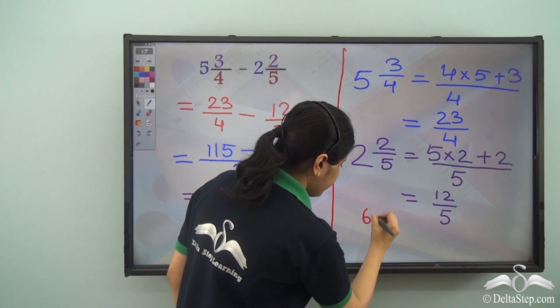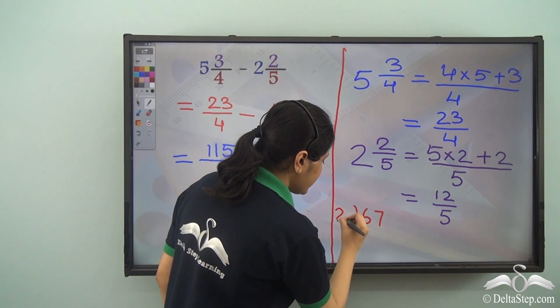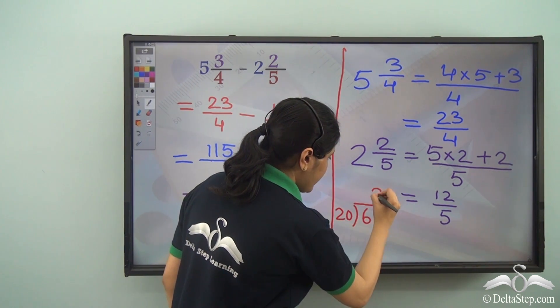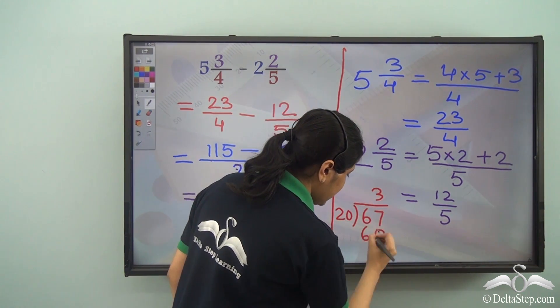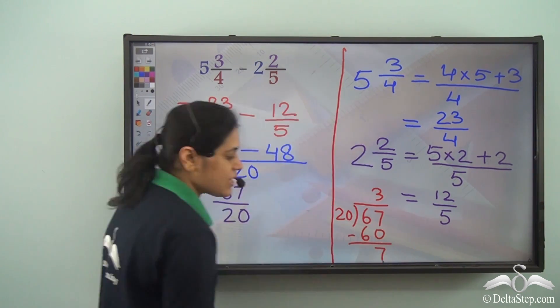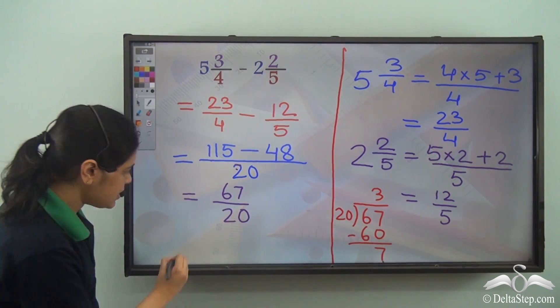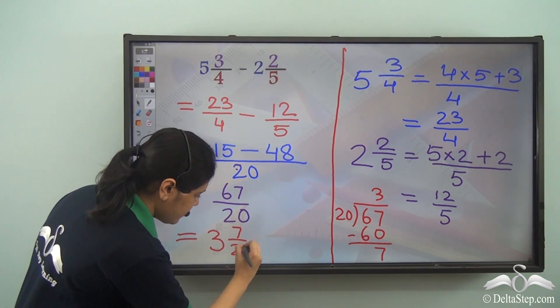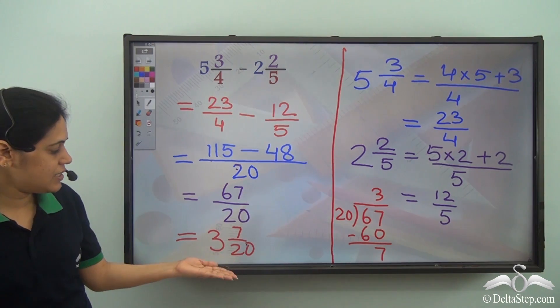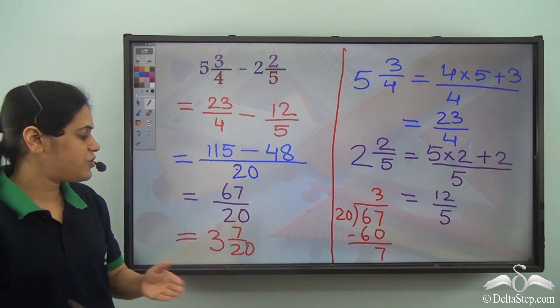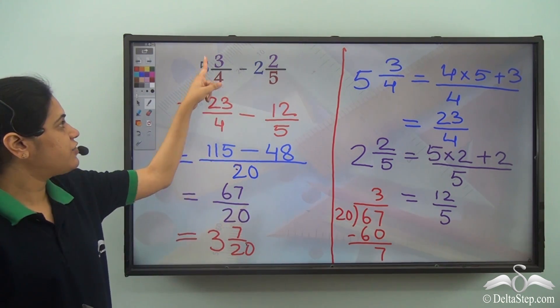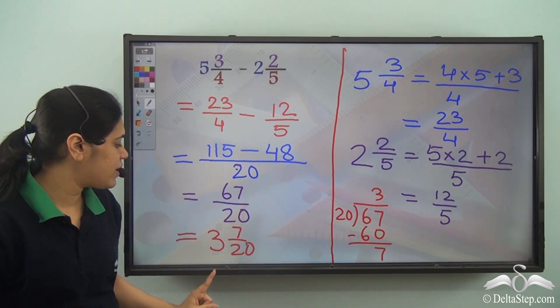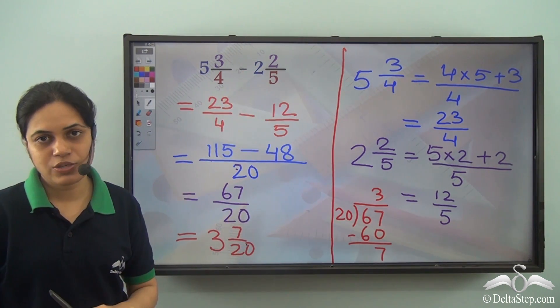So 67 divided by 20. Now 20 into 3 is 60 and the remainder is 7. So this is equal to 3 7 by 20. And this is the answer of subtraction. 5 3 by 4 minus 2 2 by 5 is 3 7 by 20.